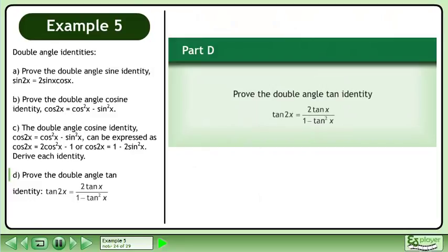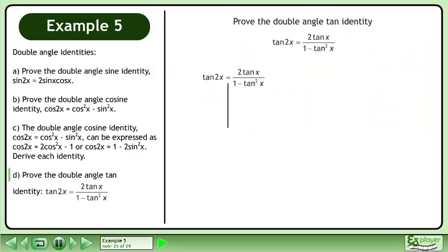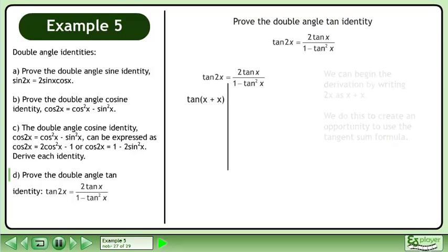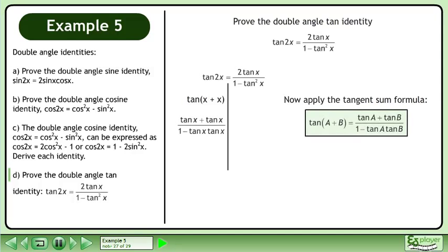In Part D, prove the double angle tangent identity: tan2x equals 2tanx over 1 minus tan²x. We write the statement and draw a line. We begin by writing 2x as x plus x to create an opportunity to use the tangent sum formula: tan(a plus b) equals tana plus tanb over 1 minus tana tanb.